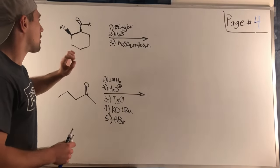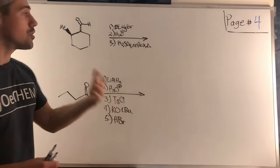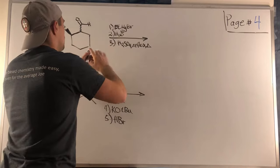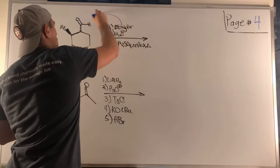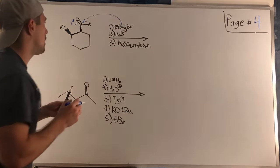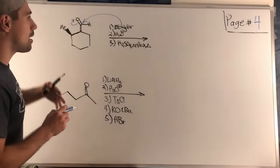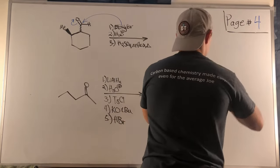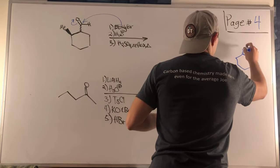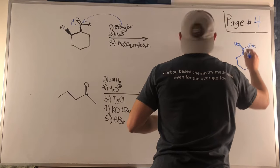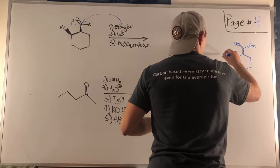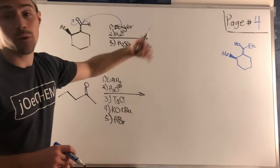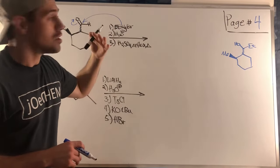The first step of the first page-four problem is a Grignard reagent — an ethyl Grignard — with an aldehyde just begging to be attacked. The ethyl Grignard attacks; we kick electrons up. Lumping steps one and two together with workup, we get our alcohol: an OH and an ethyl group attached, with the wedged methyl untouched. This gives us our product after steps one and two.